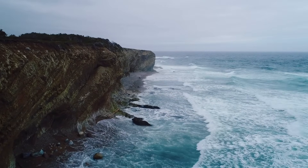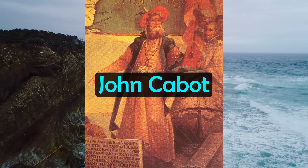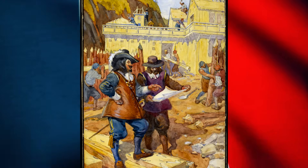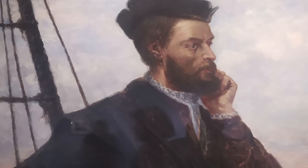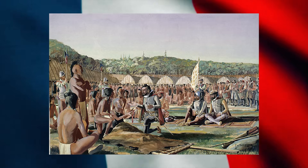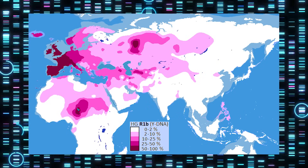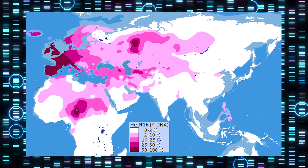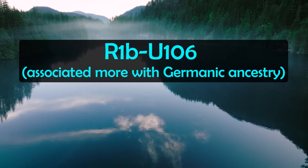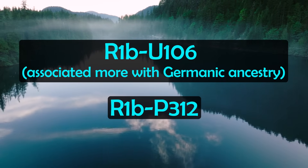The first European known to have landed in Canada after the Viking Age was John Cabot, an Italian navigator working for England who arrived in 1497. It wasn't until the French arrived though that things really changed. France was the first European power to colonise large parts of Canada, beginning with Jacques Cartier's voyages in the 1530s and the establishment of New France shortly after. The French brought Western European Y-DNA haplogroups, most commonly R1B — the dominant male lineage in France and Western Europe. The main branches were R1B-U106, associated with Germanic ancestry, and R1B-P312 and its subclades.